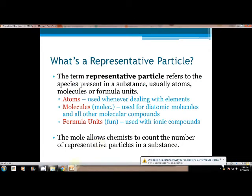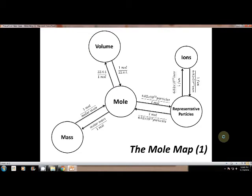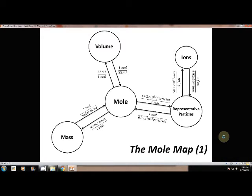So everybody grab your mole map. We are going to write something down. Today we are going to be using the mole circle, the representative particle circle, and the ion circle. In the representative particle circle we can write down our three representative particles so it reminds yourself that that's the circle I'm talking about when I see those words. We can have atoms, we can have molecules, and then we can have formula units.